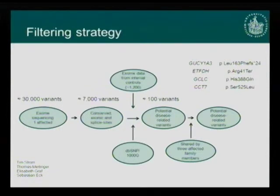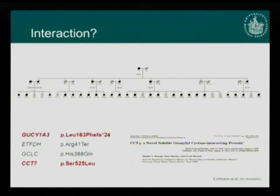In order to identify which variant actually caused the disease, we performed a literature search and identified that GUCY1A3 and CCT7 interact at the protein level.